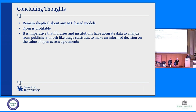A few concluding thoughts: we remain skeptical about APC-based models — I think those are very unsustainable long term. At the Charleston conference we heard that APC models really benefit publishers and don't work well for institutions or libraries. Open access is profitable, as I mentioned — the OA journal publishing market is about two billion dollars. We're also seeing this with open educational resources. Around data: I think it's important that we develop some type of shared standard and have accurate data we can analyze, much like libraries do for usage statistics with databases. We should be able to have this publication data prior to entering into agreements so we can make an informed decision on their value.